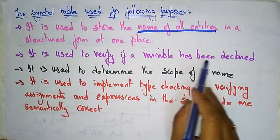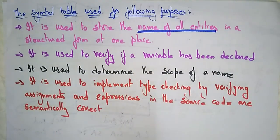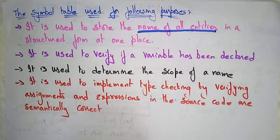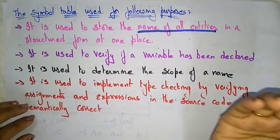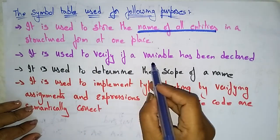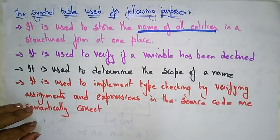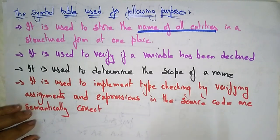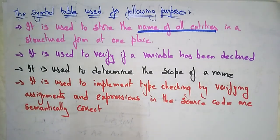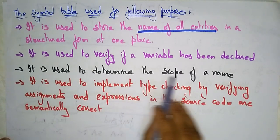Second, the symbol table is used to verify if a variable has been declared or not. All entity names are stored in the symbol table so that whenever a new name is to be added, it first checks the symbol table to verify if the variable has already been declared. If it has already been declared, it won't declare it again. If that variable is already in the symbol table, the compiler will not declare it again when it appears in the program.